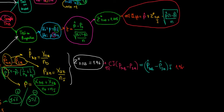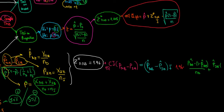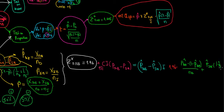The standard error for the confidence interval takes into account both sample proportions. It is the square root of: the proportion of Dutch students riding bicycles times (1 minus that proportion) divided by the number of Dutch students, plus the proportion of international students riding bicycles times (1 minus that proportion) divided by the number of international students. This gives us the confidence interval.